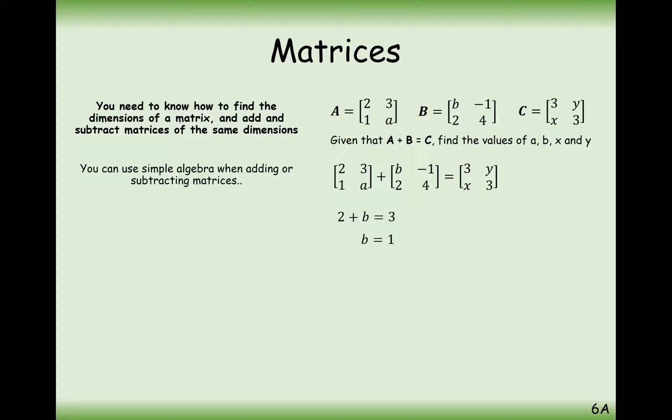And we can do the same for each of the different positions on these matrices to find the missing letters. So 3 take away 1 is Y, so Y is 2. Bottom left-hand cells, 1 plus 2 is X, so X must be 3. And bottom right, A plus 4 is 3, so A must therefore be minus 1.